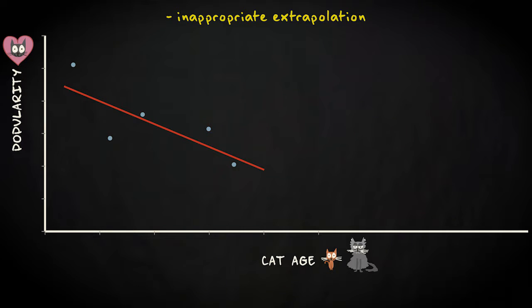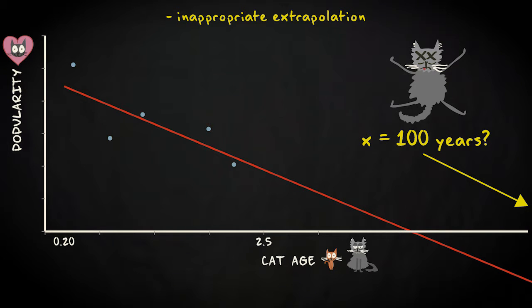But our sample only covers cat ages from 3 months, 0.25 years, to 2.5 years. We can't just extrapolate, extend the regression line, endlessly beyond this range. For example, it wouldn't make sense to predict video popularity for a 100 year old cat, simply because cats don't reach that age.